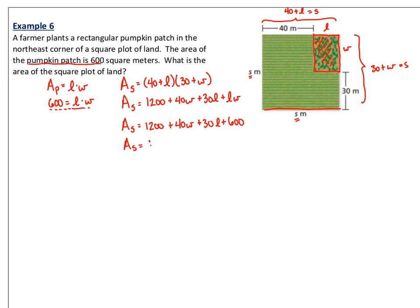The area of the square is going to equal 40 plus L times 30 plus W. If I were to foil this out, 40 times 30 is 1200. Then my outside is plus 40W. My inside is plus 30L. And my last times last is plus LW. We've got 1200 plus 40W plus 30L plus L times W. We know that LW is 600. So the area of the square is equal to 1200 plus 600. 1800 plus 40W plus 30L.